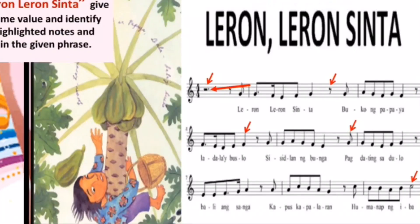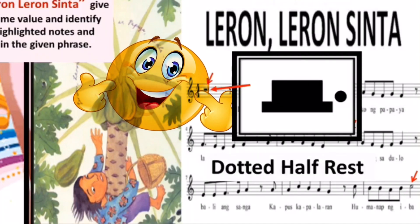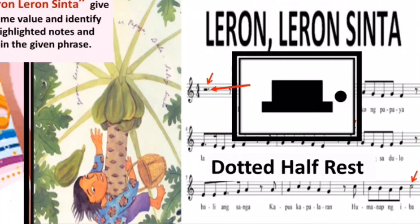Let's try to look at the song Leron Leron Sinta. Give the time value and identify the highlighted notes and rests in the given phrase. In the musical phrase, what musical symbol is this? It's a dotted half rest and its time value is 3 beats of silence.